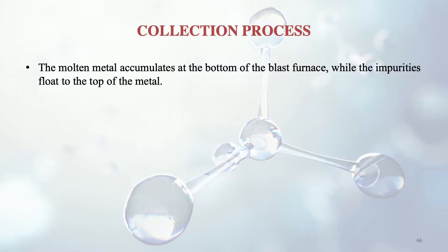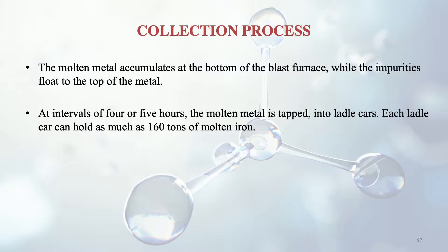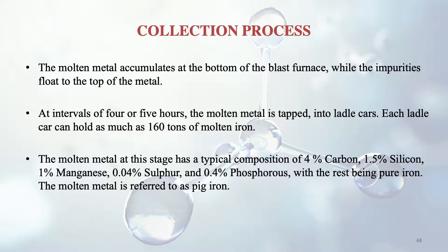After the blast furnace process, the molten metal accumulates at the bottom while impurities and slag float to the top. At regular intervals of 4 to 5 hours, the molten metal is tapped into ladle cars, each of which can hold as much as 160 tons of molten iron. The molten metal at this stage has a typical composition of 4% carbon, 1.5% silicon, 1% manganese, 0.04% sulfur and 0.4% phosphorus.